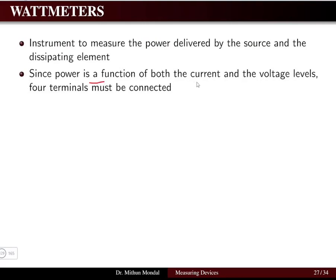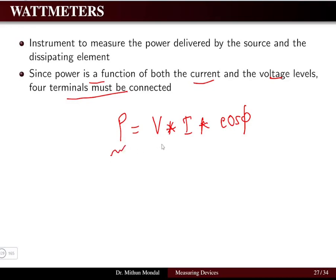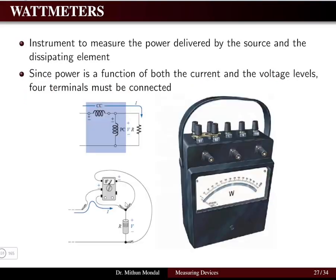Since power is a function of both current and voltage, four terminals must be connected. Power is the product of voltage and current, and for a single-phase system the power factor is also multiplied. Each of voltage and current requires two terminals, so four terminals in total are required for power measurement. We can see how power is measured using a physical wattmeter — it is a four-terminal device.